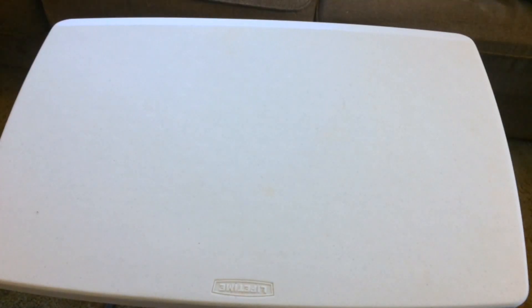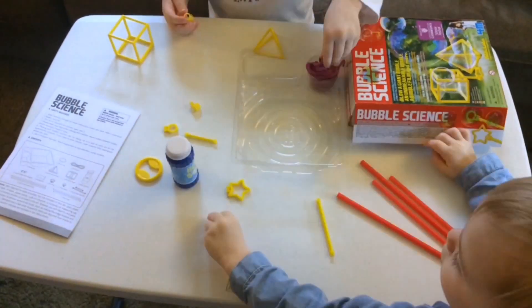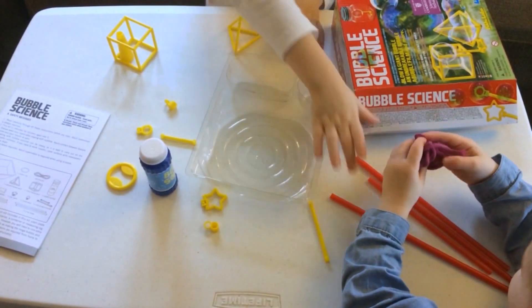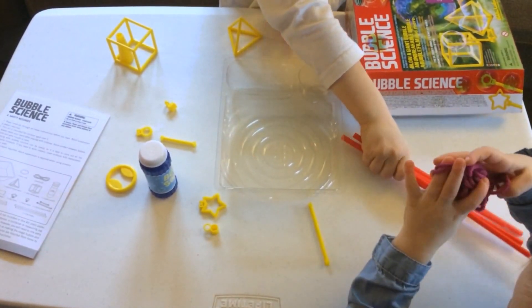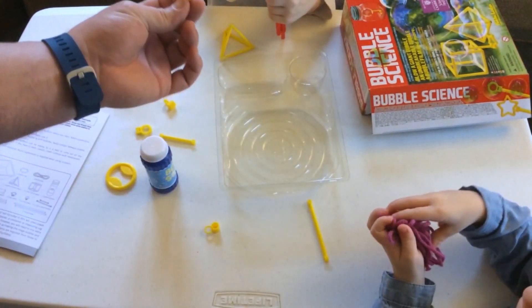Bubbles! What do we got? We got straws, different shapes. What shape is this? What is that?